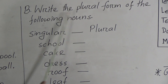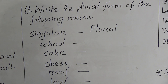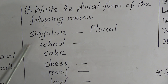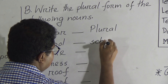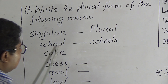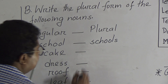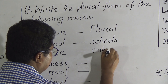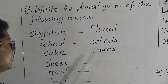So we will go to the next one, Grammar B: Write down the plural form of the following nouns. So the singular form will be given in your exam and you will have to write down the plural form. First one is 'school' — plural form will be 'schools'. We have to add S after school. Next is 'cake' — 'cakes'. We have to add S after the noun, after the singular form. One cake, many cakes.